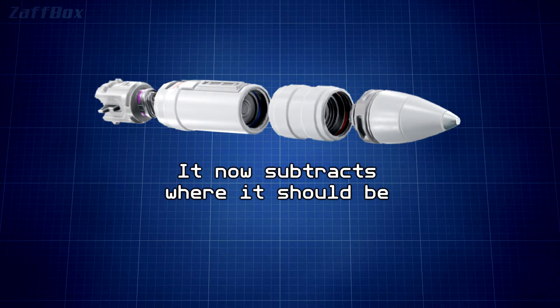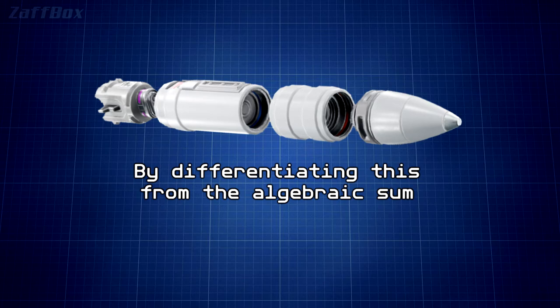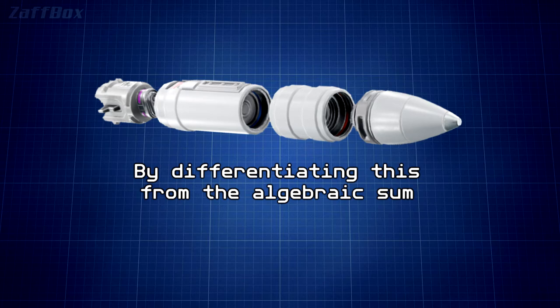knows where it was. It now subtracts where it should be from where it wasn't, or vice versa. By differentiating this from the algebraic sum of where it shouldn't be and where it was, it is able to obtain the deviation and its variation, which is called error.